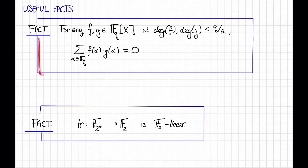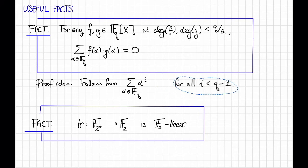The first useful fact is that for any polynomials f and g over fq, so that the degree of f and g are each strictly less than q over 2, then the sum over all alpha in fq of f of alpha times g of alpha is equal to 0. So why is this fact true? So this follows from the following fact that we've also seen in an earlier video.